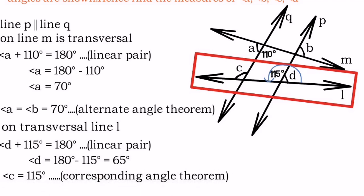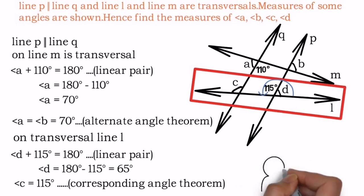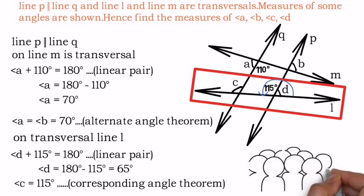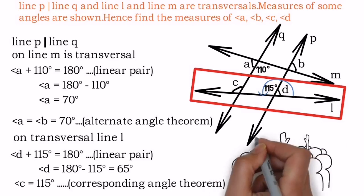So we found three angles. Now if you observe more closely, you will come to know that angle c and 115 degrees are corresponding angles, and hence we have found all the required angles in the question.